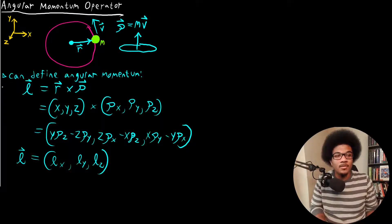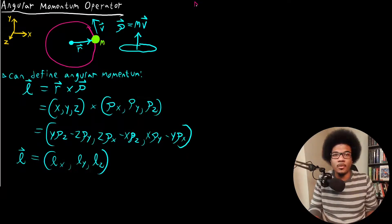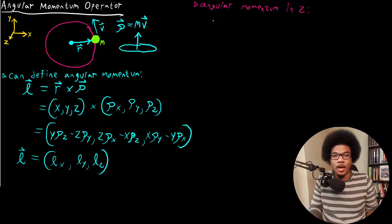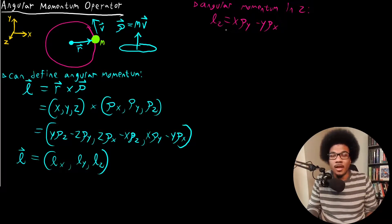Let's take one of these examples — let's take Z. So the angular momentum in the Z direction, L sub Z, is given here: X·p_Y minus Y·p_X. So we have our definition for the orbital angular momentum in the Z direction.